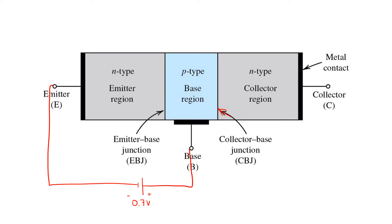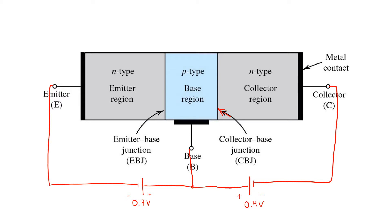Now let's consider what happens if we don't have an appropriate reverse bias there. If very small forward bias voltages are applied to the collector-base junction, not much happens — the transistor continues to operate in active mode. It's only when this collector-base junction is forward biased with about 0.4 volts or more that an appreciable amount of forward current begins to flow through the collector-base junction. When that happens, we see both junctions conducting appreciable current in the forward direction, and the transistor is then said to be operating in saturation mode.